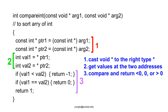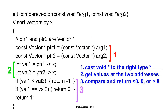The next comparison function will compare two vector objects by their x values, following the same three-step approach. The first step casts the arguments into the right type — since the array elements are vectors, the arguments are cast into addresses of vectors. The second step reads the values at the addresses; in this example we compare by x values, so we read ptr1->x and ptr2->x. The third step compares the two values.